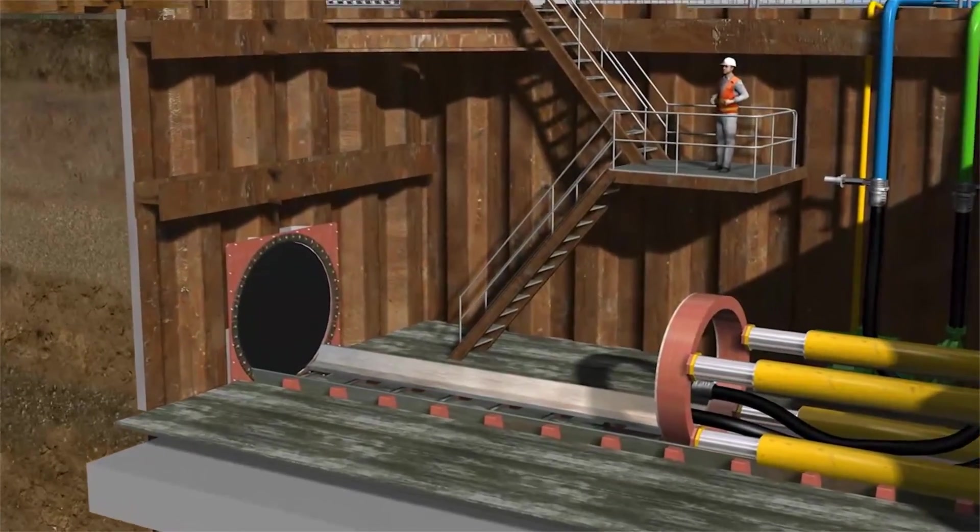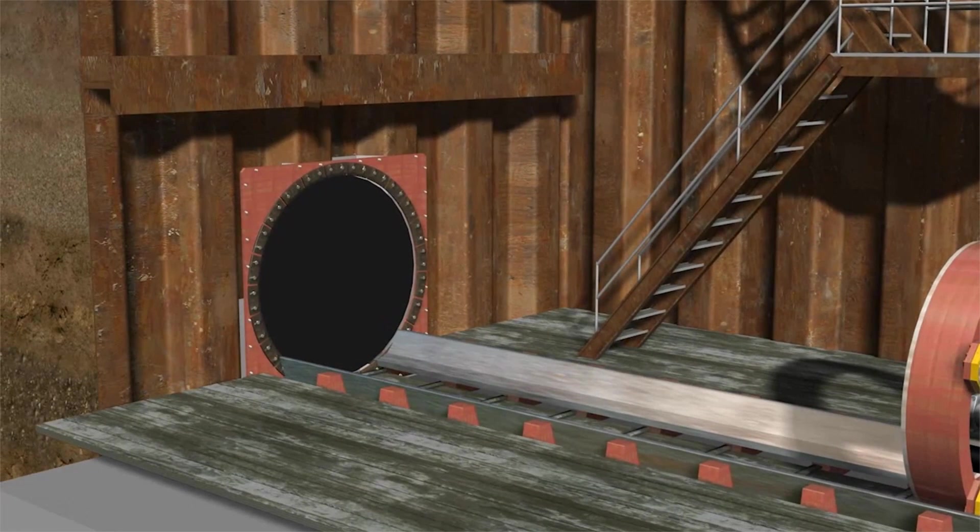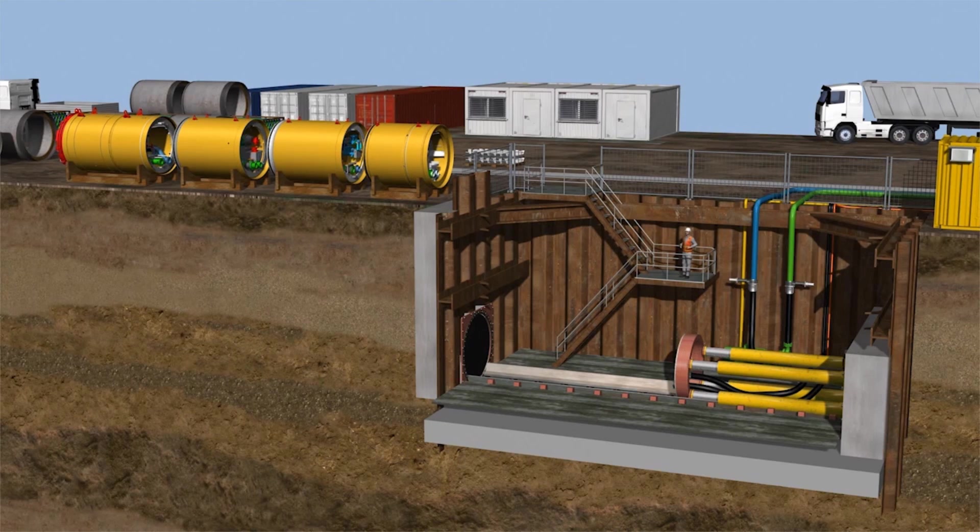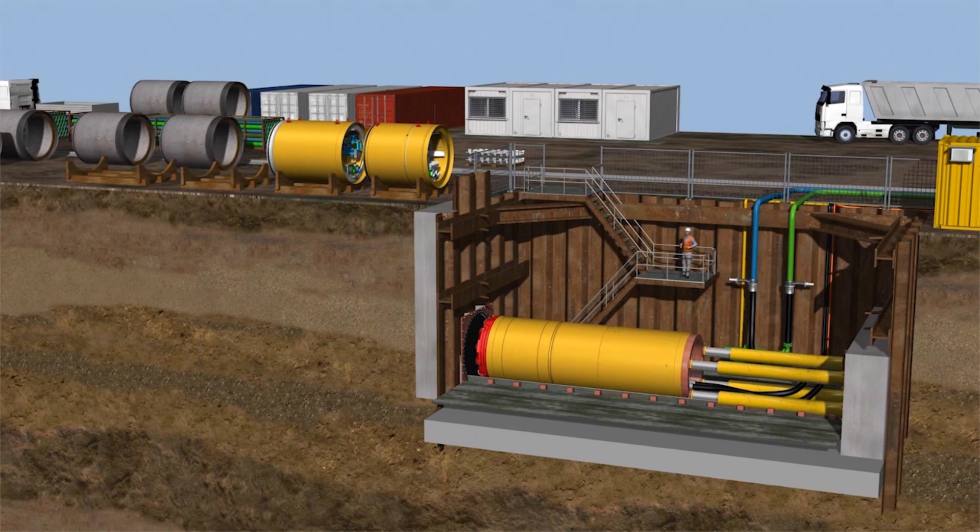A startup seal is needed to seal the shaft between the jacking pipe and the ground. With sufficiently large shafts, the startup process is simplified considerably. In this case, the first two modules—tunnel boring machine and machine pipe—can be fully set up inside the launch shaft.